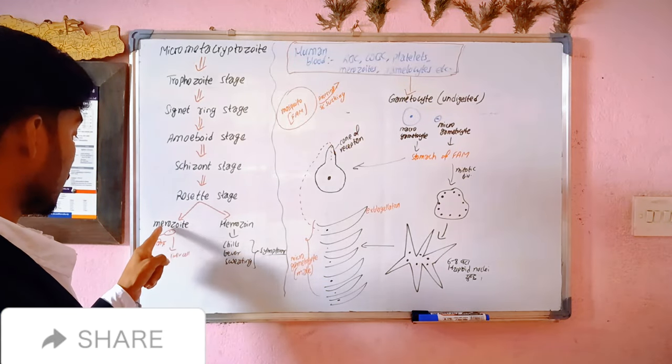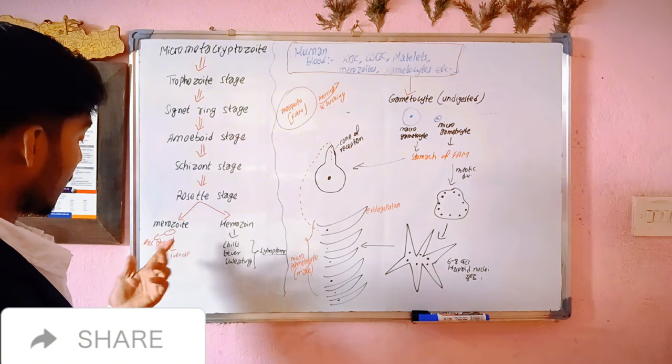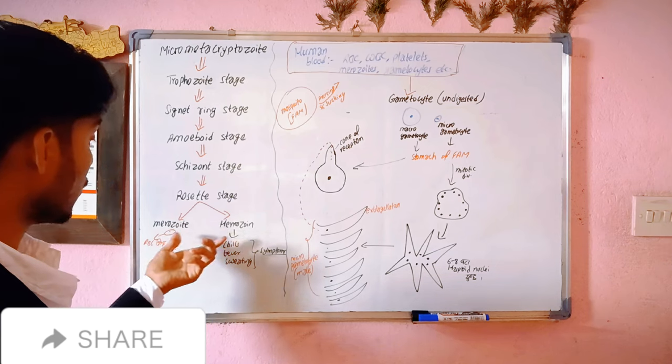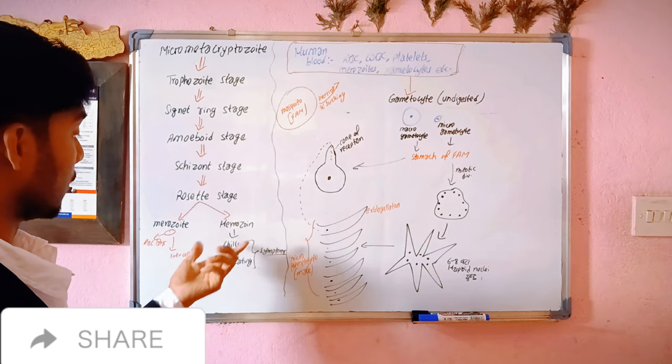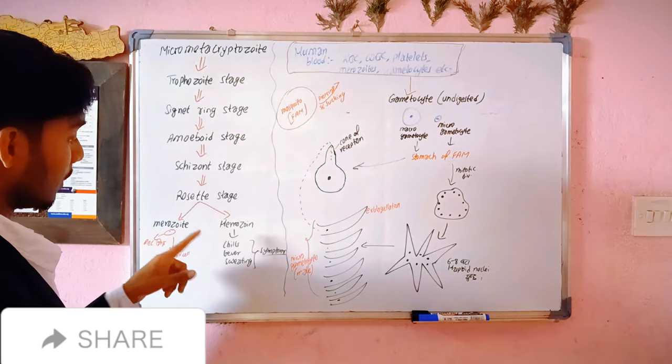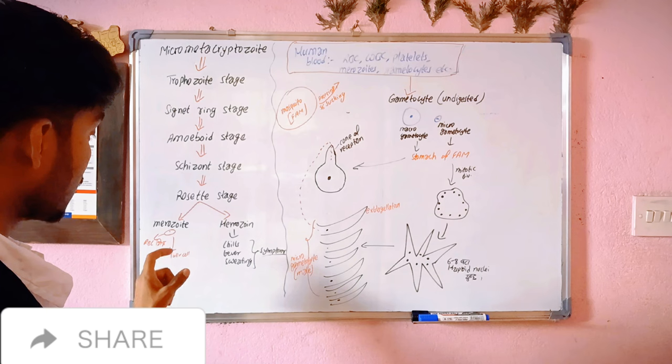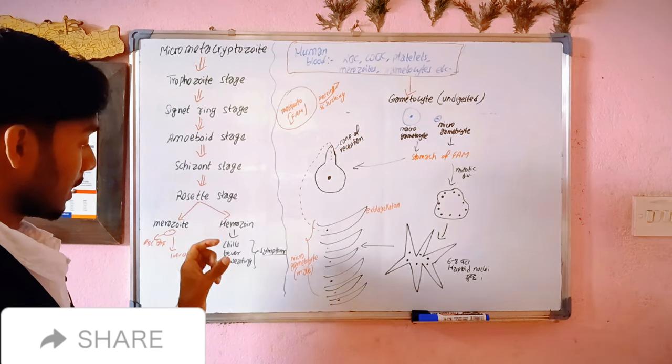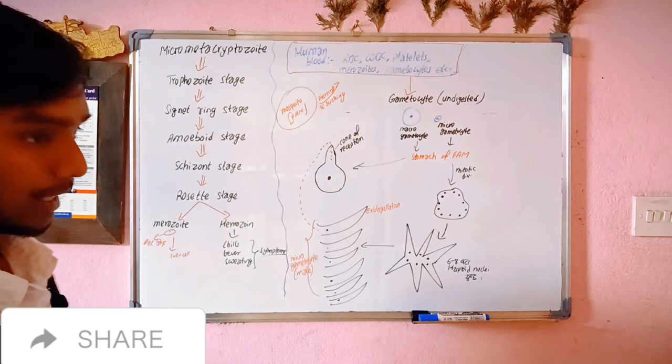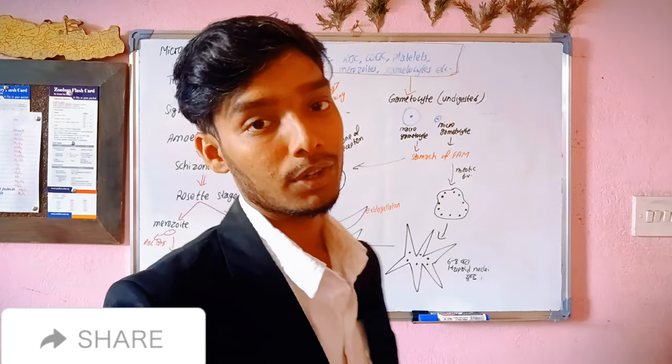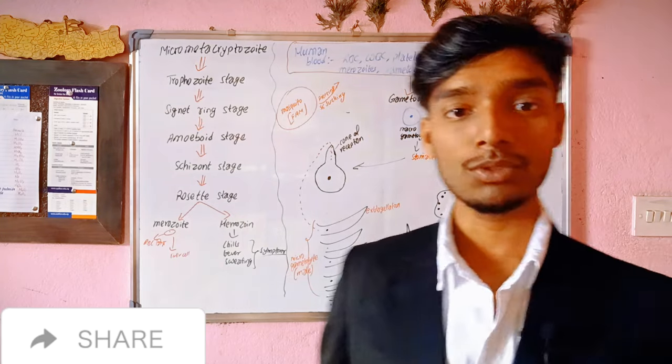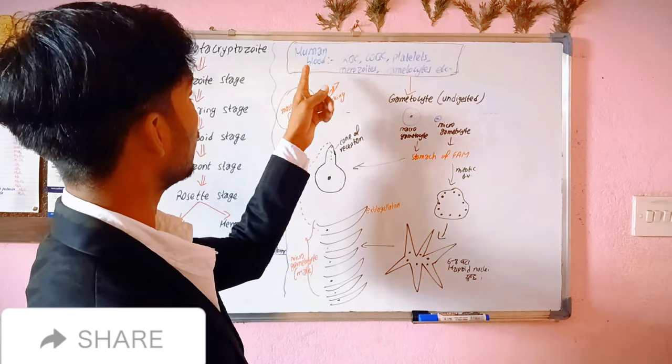Hematin becomes hemozoin. When hemozoin enters inside the human blood, what happens? The symptoms like chills, fever, and sweating are seen in human body.